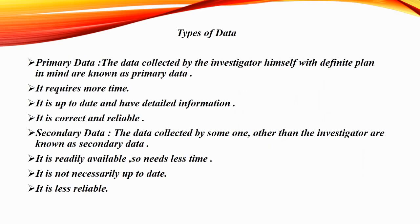We will now learn about different types of data. The data collected by the investigator himself with a definite plan in mind is known as primary data. Data collected by someone other than the investigator is known as secondary data. Primary data requires more time, is up to date, has detailed information, and is correct and reliable. Secondary data is readily available and needs less time, but it is not necessarily up to date and is less reliable.